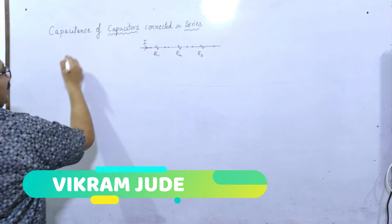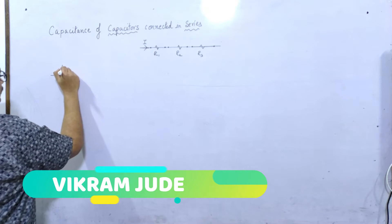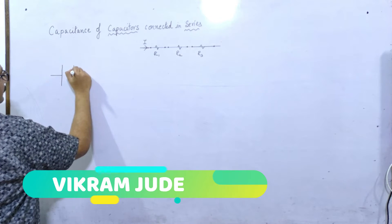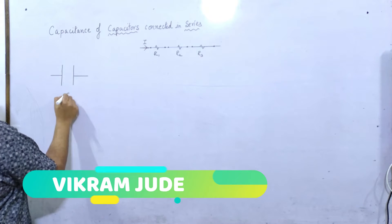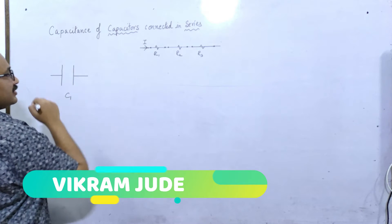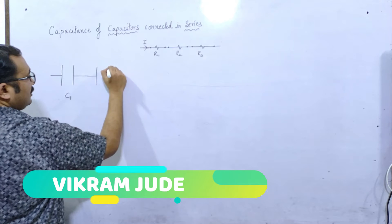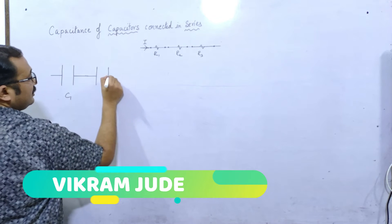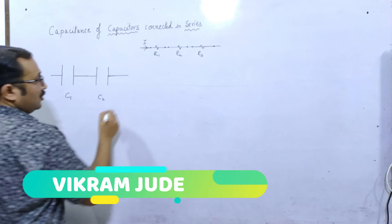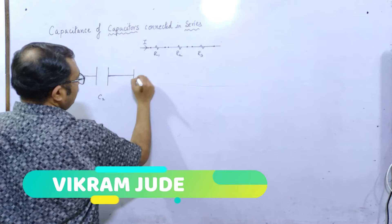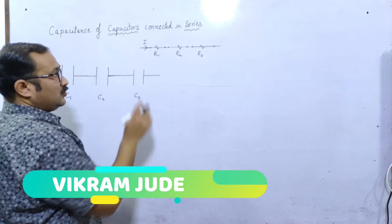अगर आप Capacitor की बात करोगे, Likewise — तो यहाँ पर कहेंगे कि हमारे पास Capacitor है। एक Capacitor यह है — यह है C1, जिस तरह से Resistance, उस तरह से Capacitors। फिर यहाँ पर हमारे पास दूसरा Capacitor है — वह C2, और फिर एक और Capacitor है — C3। बिल्कुल वही चीज़।